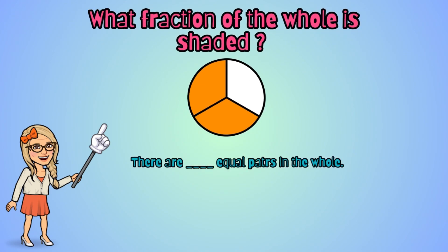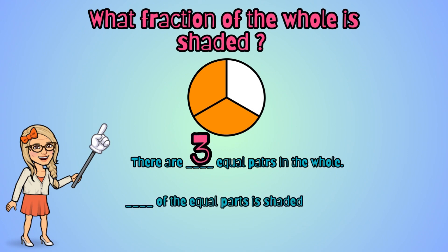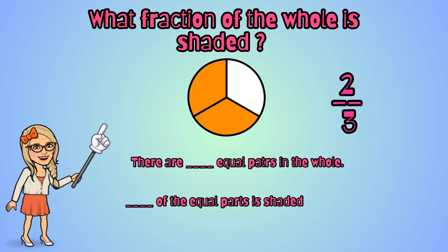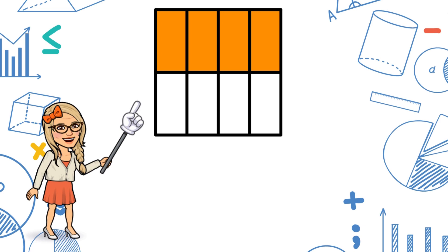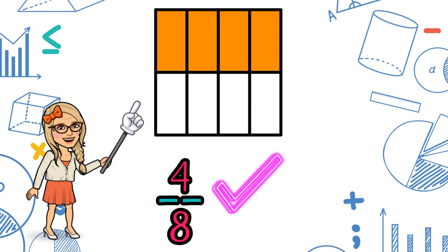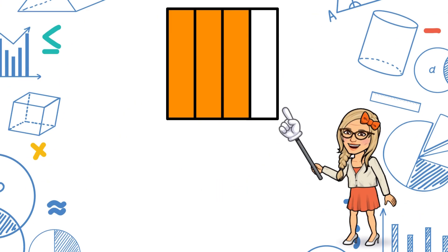There are how many equal parts in this whole? Three — very good! Now, what number of pieces is shaded? Two. So the fraction is two thirds. Two thirds of the circle is shaded in. Very good! Now let's see this whole — what fraction of the whole is shaded? How many pieces do I have in all in this whole? Eight. How many parts are shaded in? Four. So four eighths of this whole is shaded.